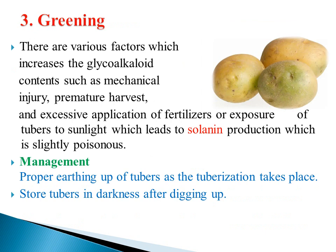The third disorder is greening. Various factors increase the glycoalkaloid content, such as mechanical injury, premature harvesting, excessive application of fertilizer, or exposure of tubers to sunlight, which leads to solanin production. Greening disorder mainly occurs when tubers are exposed to sunlight, and that exposed part forms a glycoalkaloid called solanin. Solanin is poisonous to human consumption — 2 milligrams of solanin per 100 grams of potato is harmful.